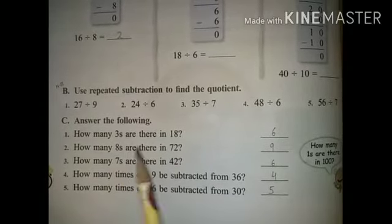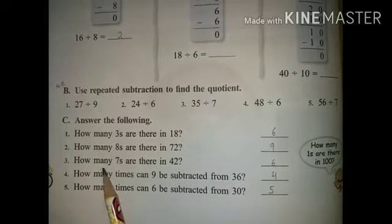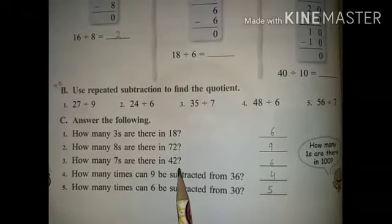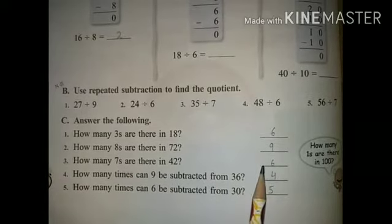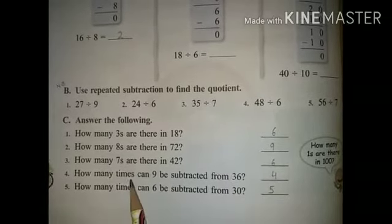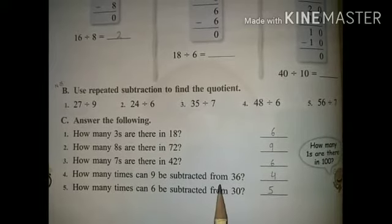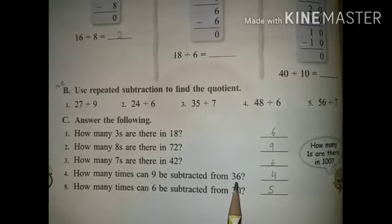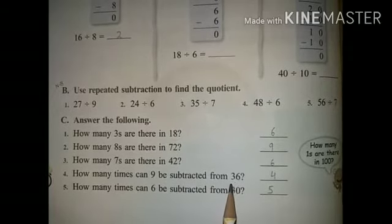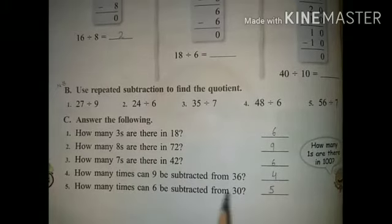Second question: how many 8's are there in 72? 72 divided — how many 8's are there gives 9. Third: how many 7's are there in 42? 42 divided by 7 gives 6 times. How many times can 9 be subtracted from 36? 36 divided by 9.